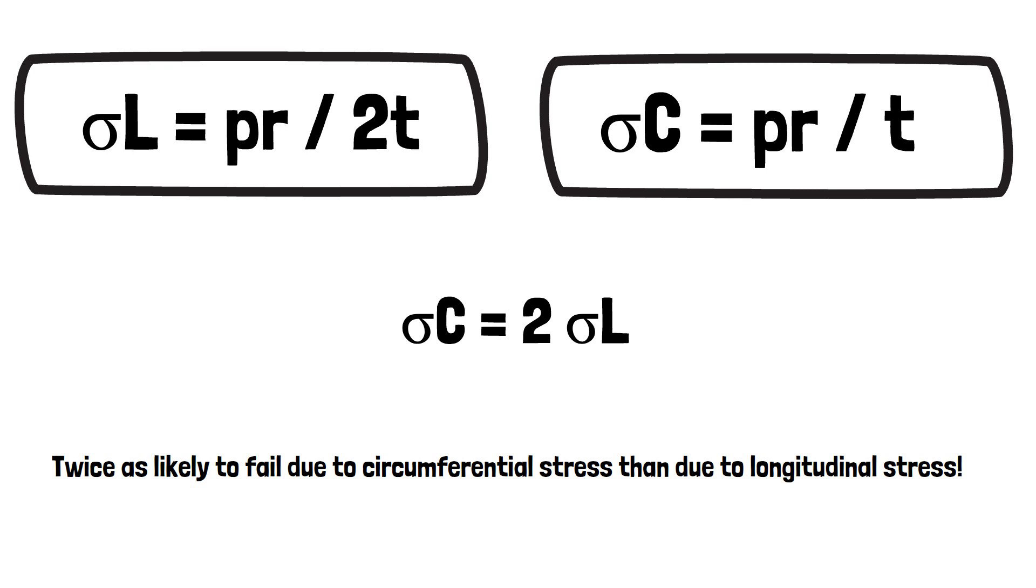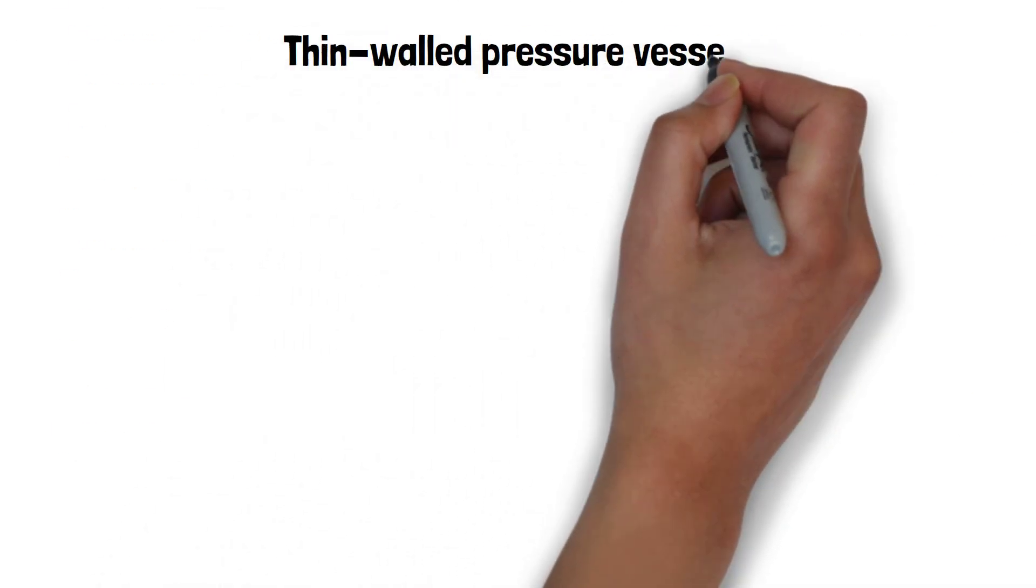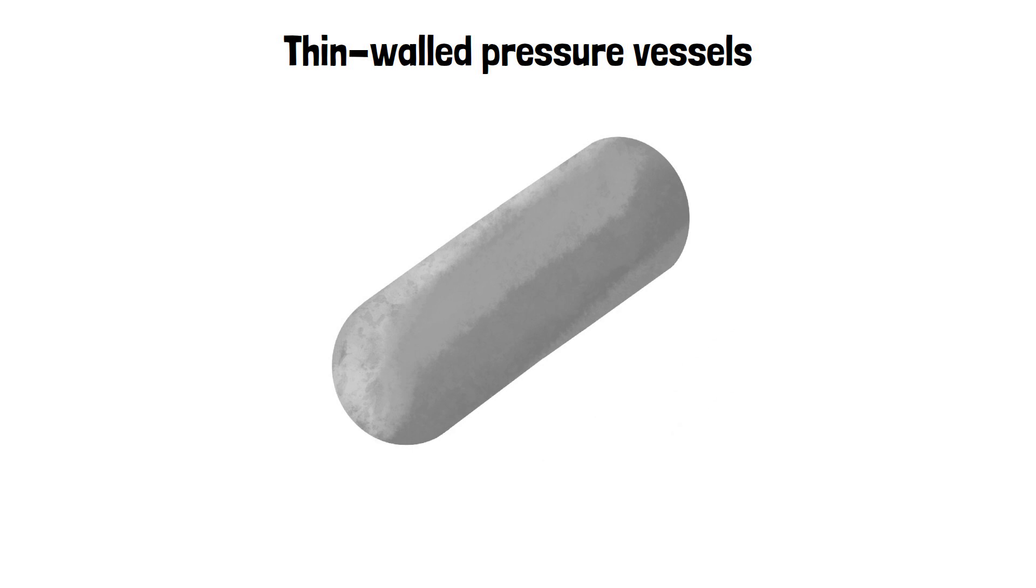Finally, we will talk about thin walled pressure vessels. Take a boiler for example. The tank must have two half-sphere domes at the ends. How do we calculate the stress in these?